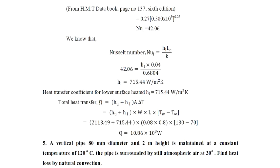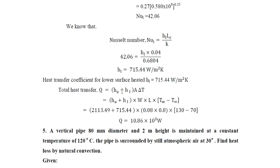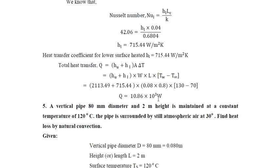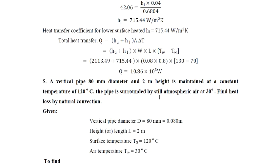The total heat transfer (heat input required) for the plate is: q = (h_u + h₁) × W × L × ΔT = (2113.49 + 715.44) × 0.08 × 0.8 × (130 − 70) = 10.86 × 10³ W = 10.86 kW. So 10.86 kW of heat input to the plate is required to maintain 130°C.